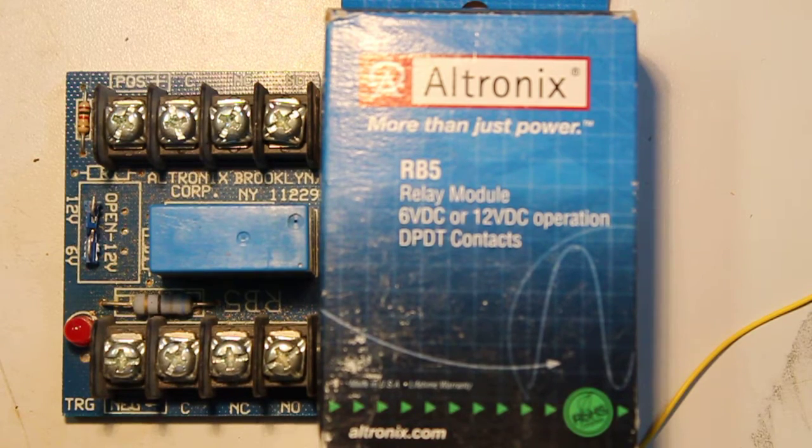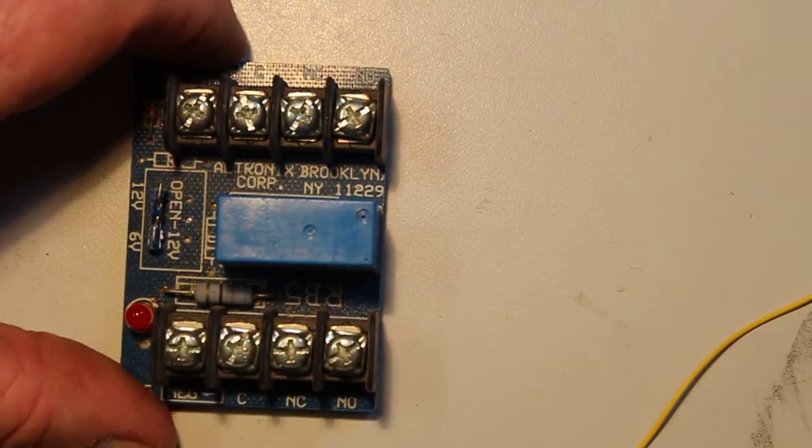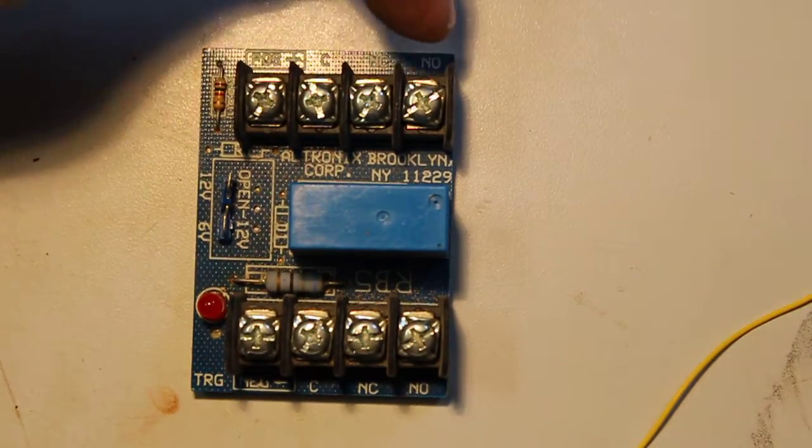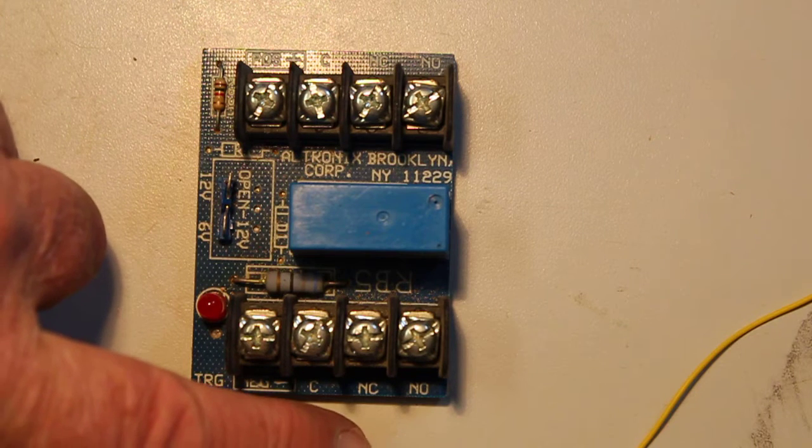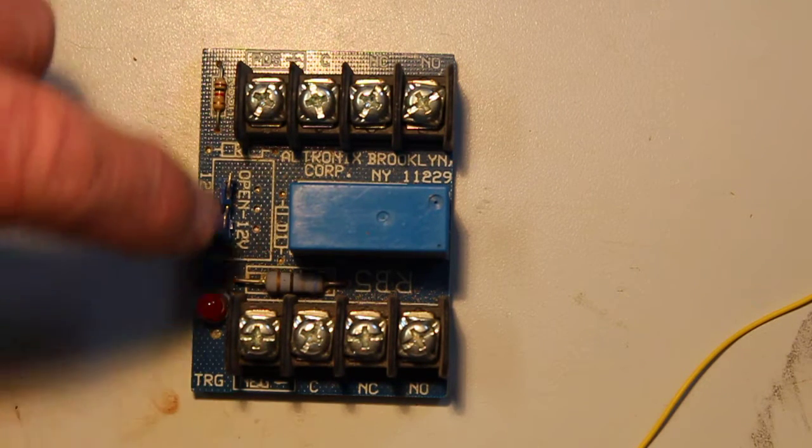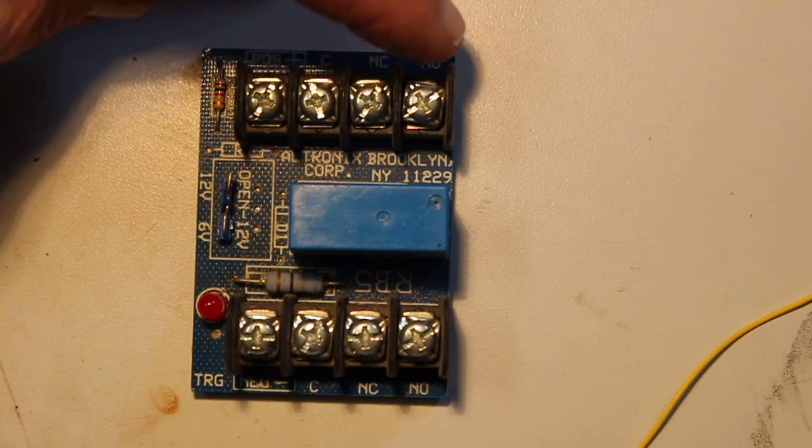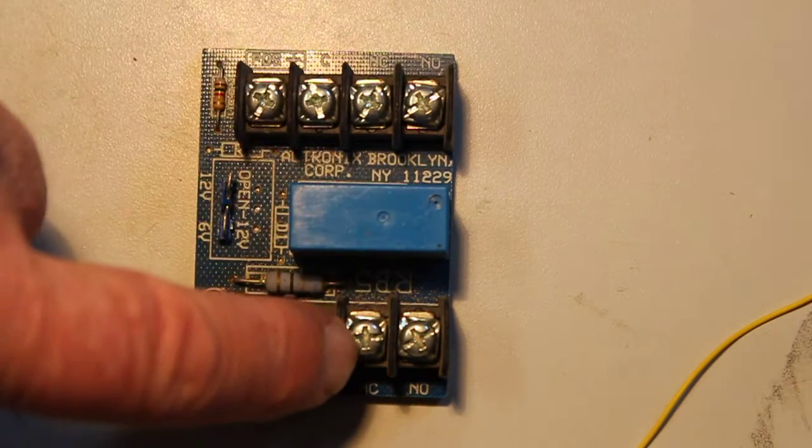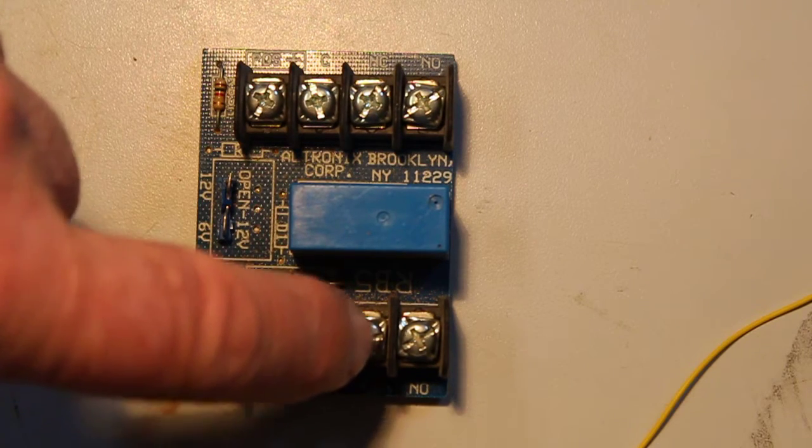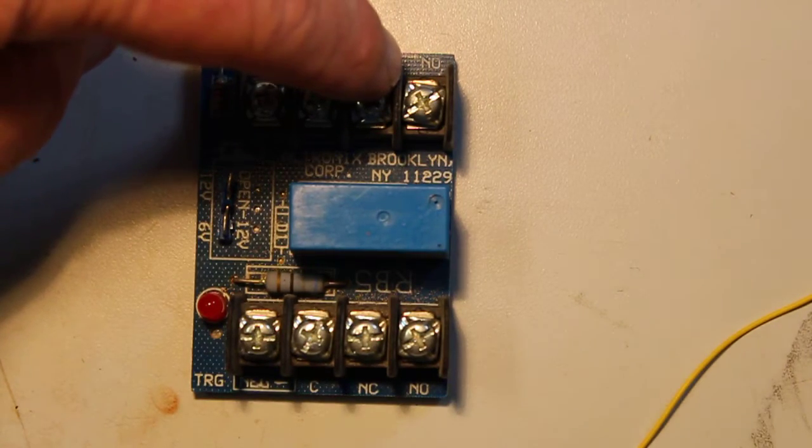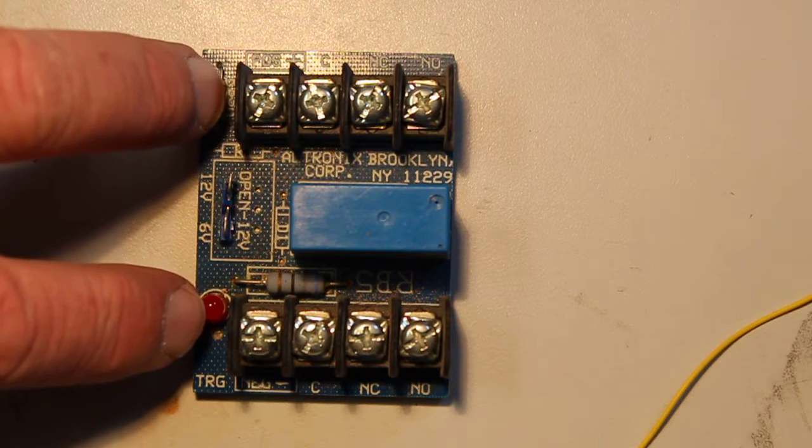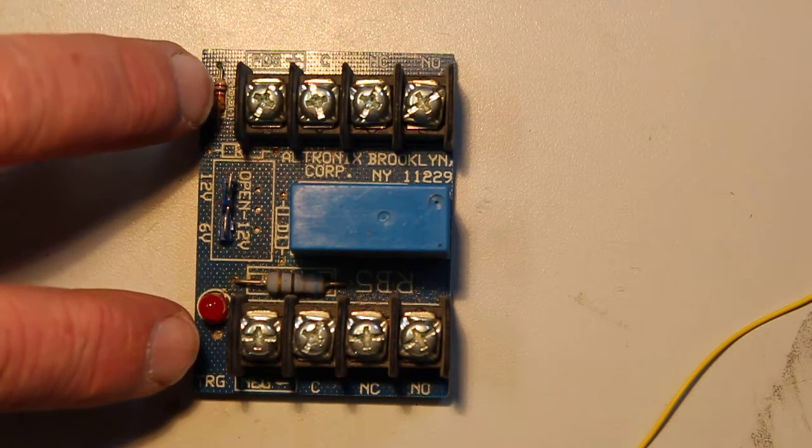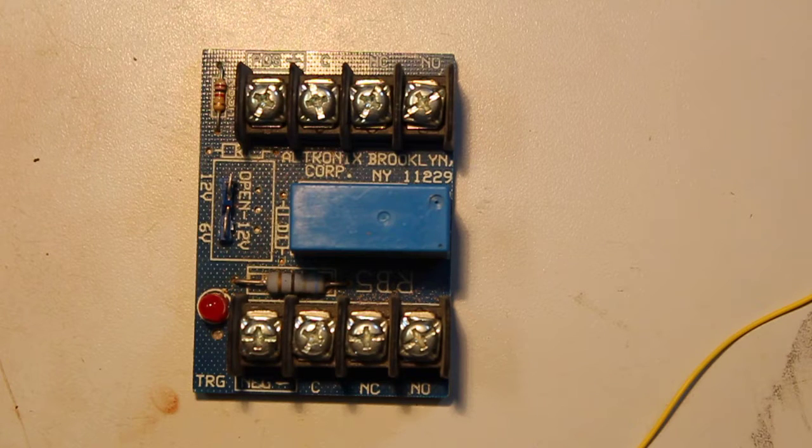So I'm going to move this box out of the way so you can see down here on the board. Normally open, normally closed, common, and positive on this side. This side over here is normally open, normally closed, common, and negative. What we're going to do is jump from the normally open over to the normally closed on both sides. This positive and negative is going to be your input voltage that would come from say the fire alarm panel.